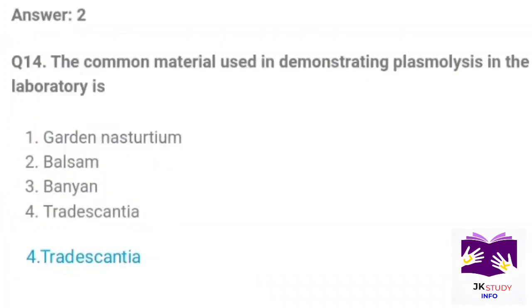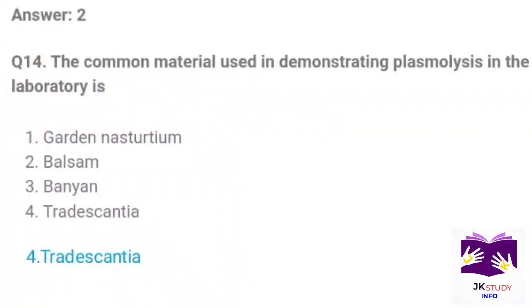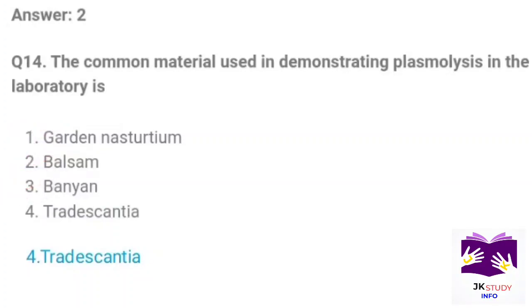Next question: The common material used in demonstrating plasmolysis in the laboratory is? Option 1: garden nasturtium. Option 2: Elodea. Option 3: onion. Option 4: Tradescantia. Correct option is option 4: Tradescantia.